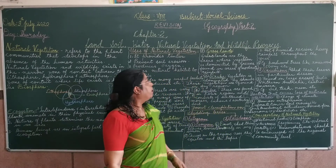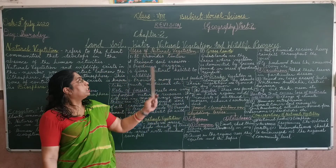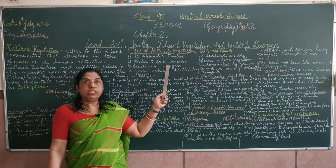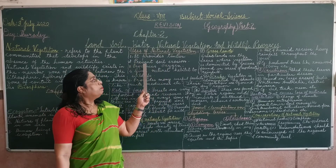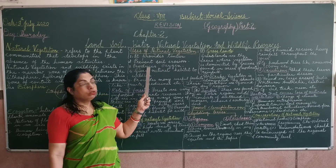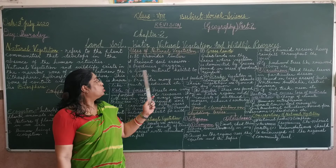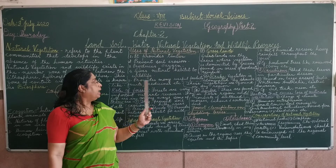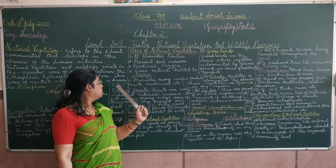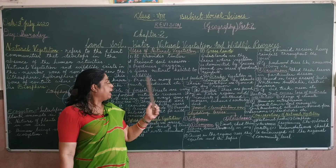The next topic is uses of natural vegetation. First, it provides timber. Second, it prevents soil erosion. Third, it reduces oxygen. Fourth, it gives natural habitat to wildlife. Fifth, it provides many useful products like fruits, medicines, etc.